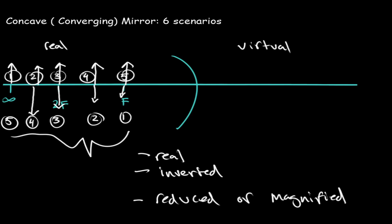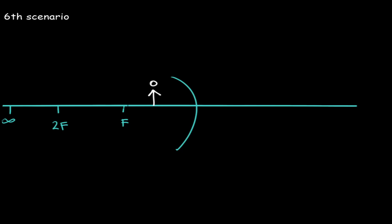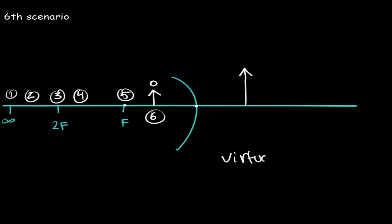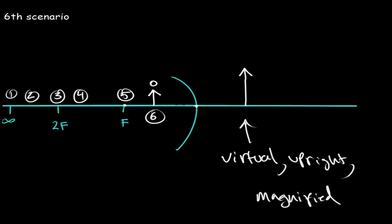The sixth scenario is if you were to place the object in between the focal point and the mirror. All you have to remember is that if your object is placed in between f and the mirror, your image will always be virtual, upright, and magnified.